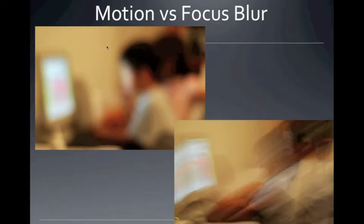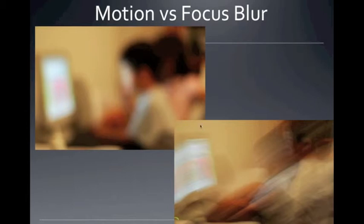Let's compare an out-of-focus picture to a blurred movement picture. Here, this is nice soft blurring — it's not desirable, but that's out of focus. This one, you can see there's direction to the blur — that is based off of movement. So blur because of focus versus blur because of movement are very different effects.